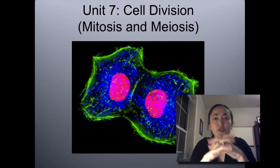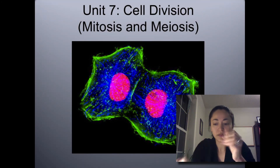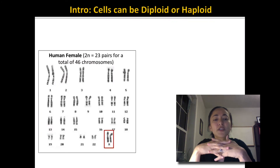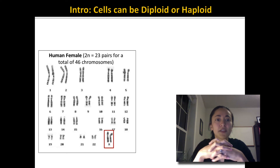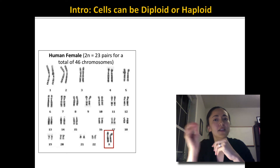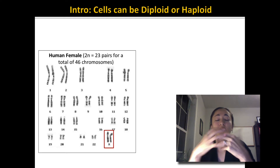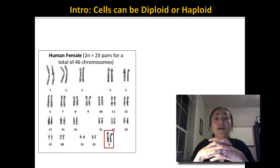This is the review for Unit 7 Cell Division. Before we start talking about the two different types of cell division, let's talk about what type of cells are present in living organisms.